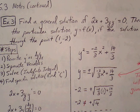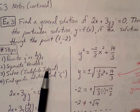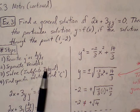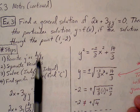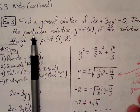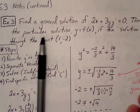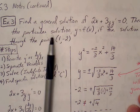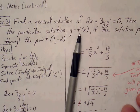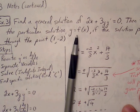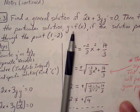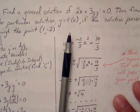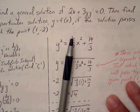Let's continue with chapter 6.3 notes, and this is example 3. We're going to continue with solving differential equations. Find a general solution of 2x plus 3y, y prime equals 0. Then find the particular solution, y equals f of x, if the solution passes through the point (1, negative 2).